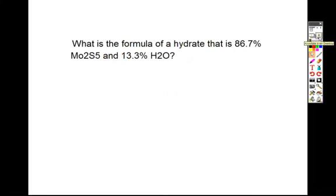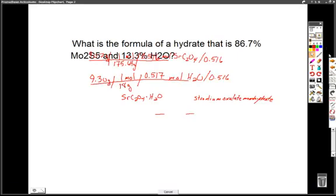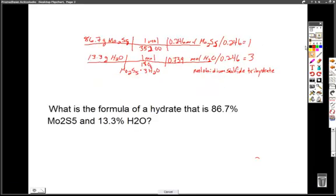What is the formula for a hydrate that is 86.7% Mo2S5 and 13.3% H2O? And on this problem, again, when you're given percents, what you want to do is convert to grams. So what we do here is we convert the percents to grams. We then divide by the molar mass.